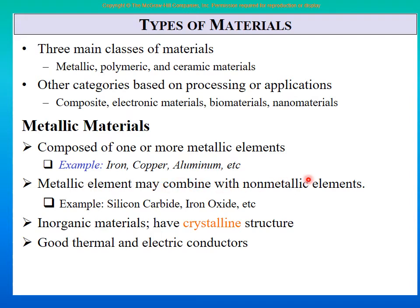A metallic element may combine with non-metallic elements — for example, silicon can combine with carbon (non-metal) and a new compound is formed called silicon carbide; or iron can combine with oxygen to form iron oxide. Those are compounds, something else. Now, metals are inorganic materials — that is the first thing. Metals have a crystalline structure. Metals have good thermal conductivity and good electrical conductivity. These four things together define a metal: inorganic, crystalline structure, good thermal conductivity, and good electrical conductivity.